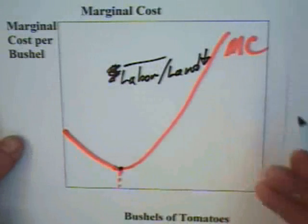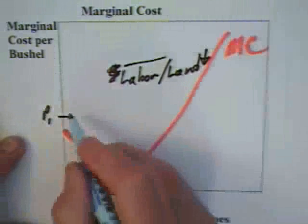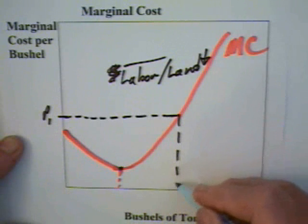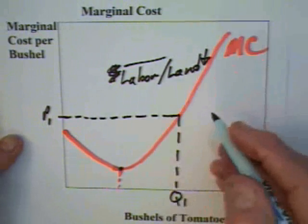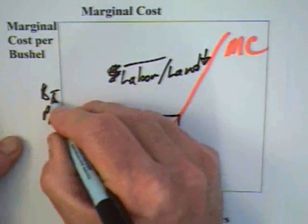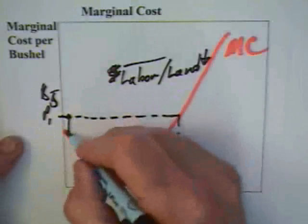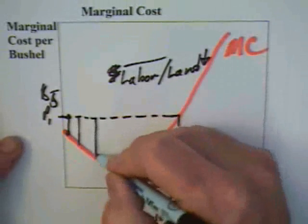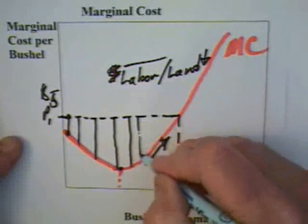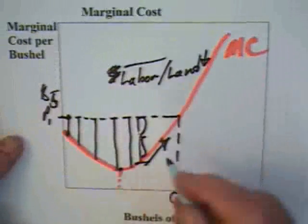The question then becomes: how much should a firm produce? If a firm can charge price P1, then the firm should extend output up to a point like Q1. The firm should produce Q1 primarily because it gets a price of P1 — call that $5 — and this $5 price is greater than the marginal cost there. The firm should continue to expand even as marginal cost starts going up, because so long as there is a gap between the price of the good and the marginal cost of production, profits are going to be rising.